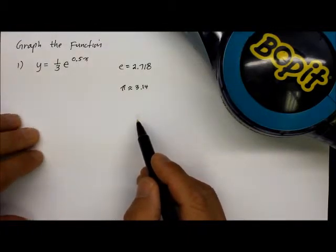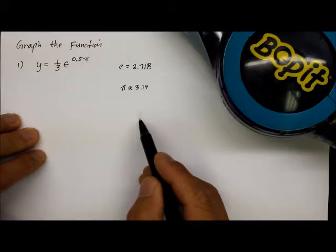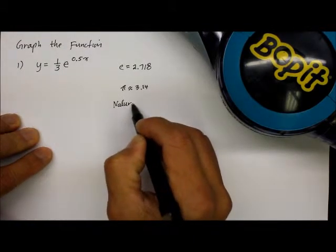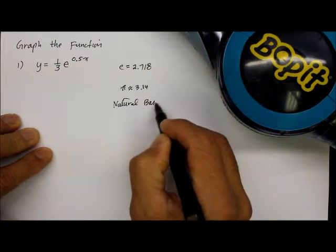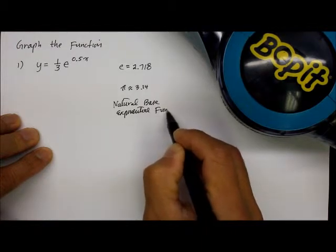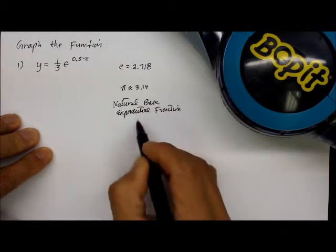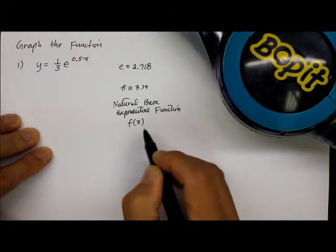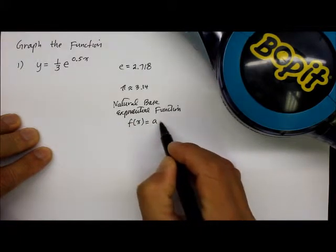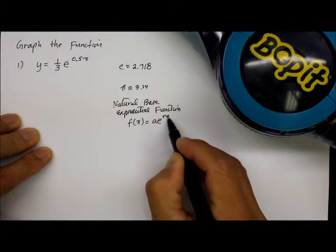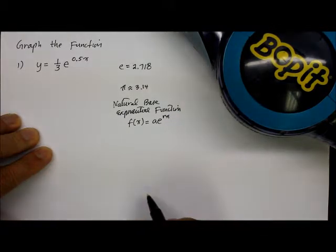In order to get started, let's first understand the general natural base exponential function. That is written as f(x), or sometimes y, equals the coefficient a times e raised to the rx exponent.